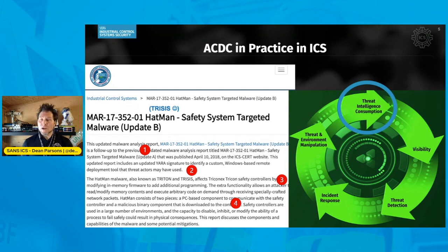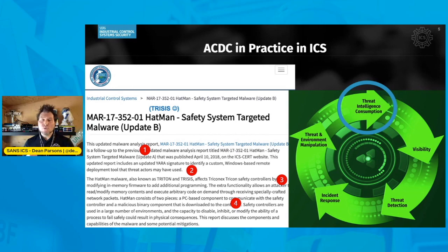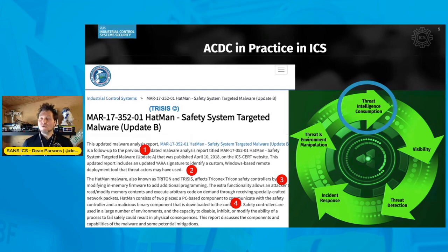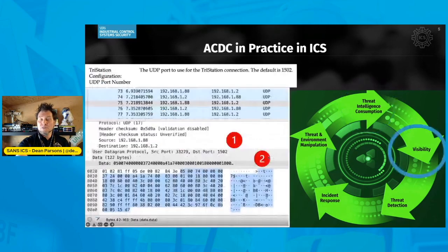Specifically, there are two areas it can scope. One is on the Windows OT system component for the malware, but it also looks for the binary component that the adversaries use to manipulate the programmable logic controller. With threat intelligence consumption, we know there is a threat targeted to the industrial control system area, targeting safety-instrumented system assets in engineering environments. The capability of this threat is modifying in-memory firmware to malicious logic programming, and a compromised safety-instrumented system could result in physical damage and safety consequences.